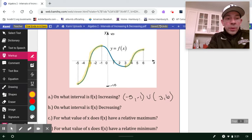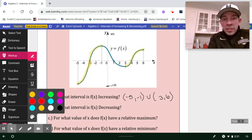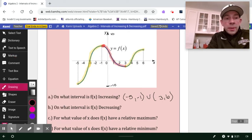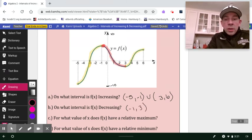Now let's talk about decreasing. When are we decreasing? So the decreasing starts at negative one and continues until we hit three. So putting that all together, we'll say from negative one to three, and that was the only interval.